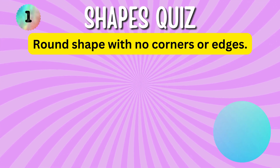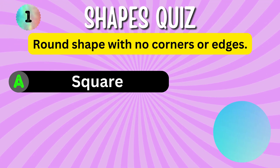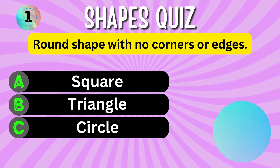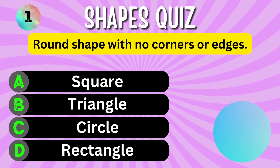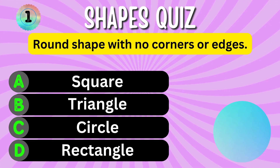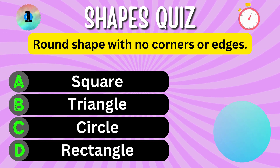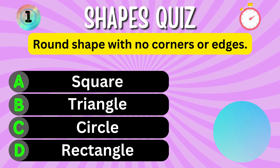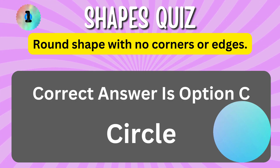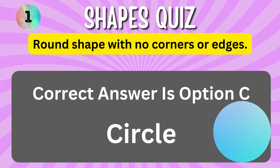Round shape with no corners or edges. Option A. Option B. Option C. Option D. You have 5 seconds to choose the correct answer. Your time starts now. The correct answer is Option C, Circle.